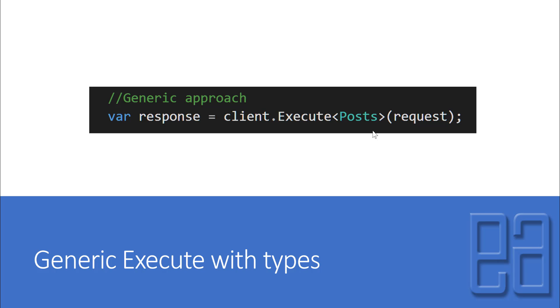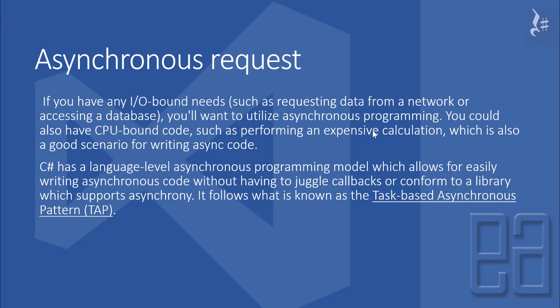The next one is the asynchronous request. If you have any IO-bound needs you want to utilize asynchronous programming, or you could have a CPU-bound course performing an expensive calculation — both are good scenarios for writing asynchronous code. C# has a language-level asynchronous programming model which allows for easily writing asynchronous code without having to juggle callbacks or conform to a library that supports async. It follows what is known as the Task-Based Asynchronous Pattern (TAP).